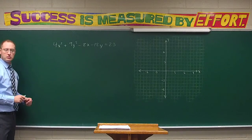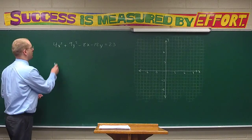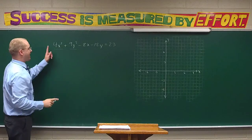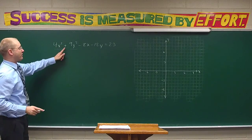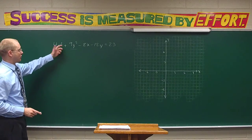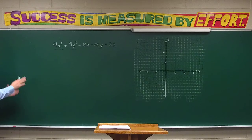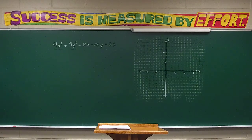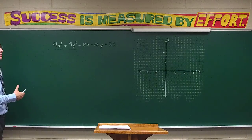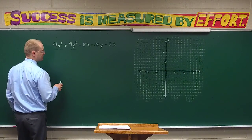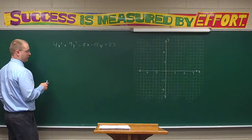They're both squared and they have a different number — they're both squared and they have different numbers, and they're added. That's another important thing I keep mentioning: they're squared, added, and have different numbers. So with the ellipse, what am I going to do to get ready to graph — to get it into elliptical form?